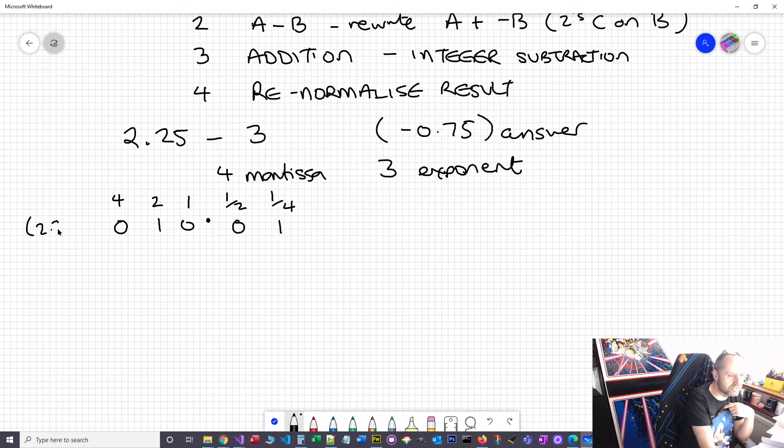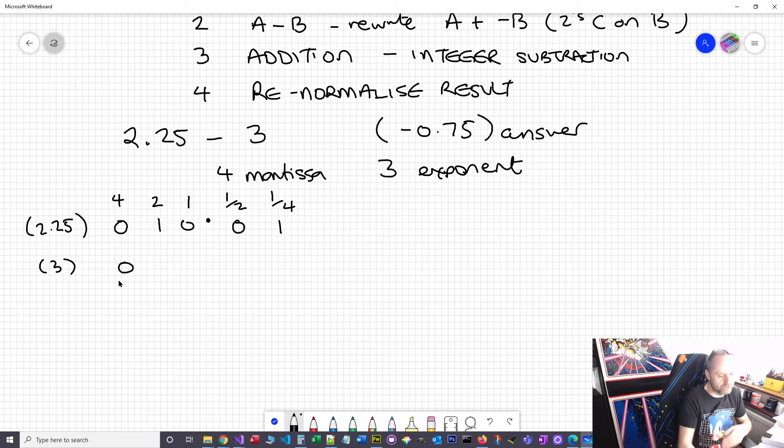Always write at the side to give the examiner a chance to know what the number is you've written down. Now let's have a go at the three. So three would be a sign bit of zero because it's positive, then a two and a one, and then no fractional part.